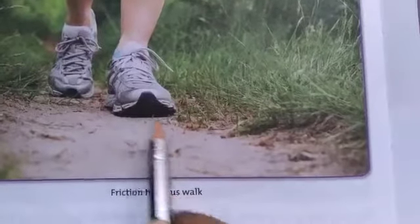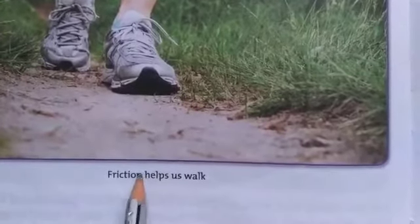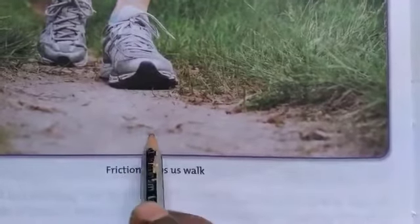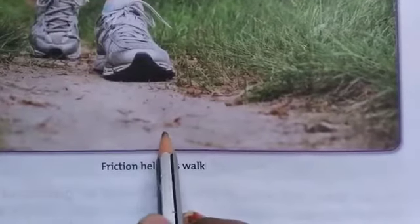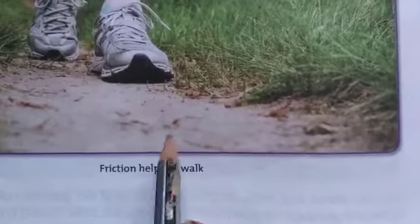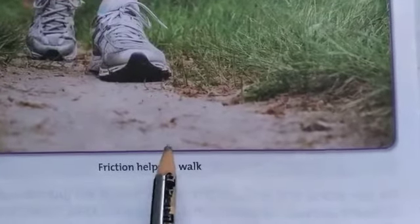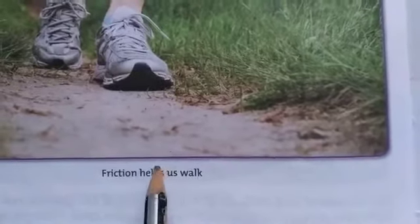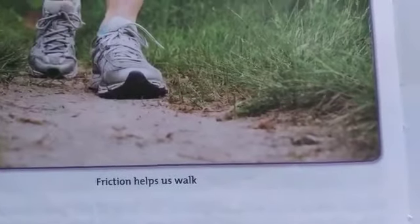Here you can see a picture of a person walking — friction also helps us in walking. When we walk, there is friction between our feet or shoes and the ground. This friction helps us walk on the ground and also hold things. Friction slows down a moving object, but other forces can help an object move. Even our car stops when brakes are applied, due to friction.